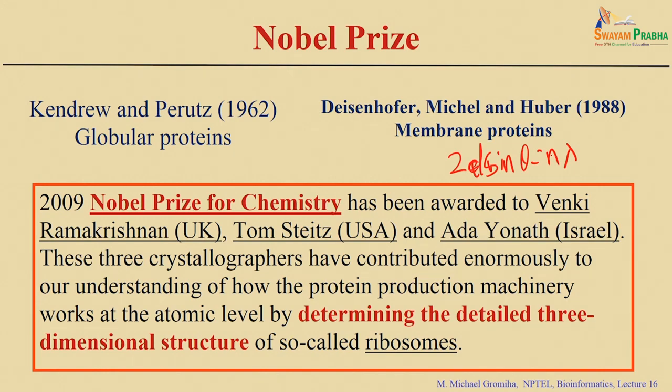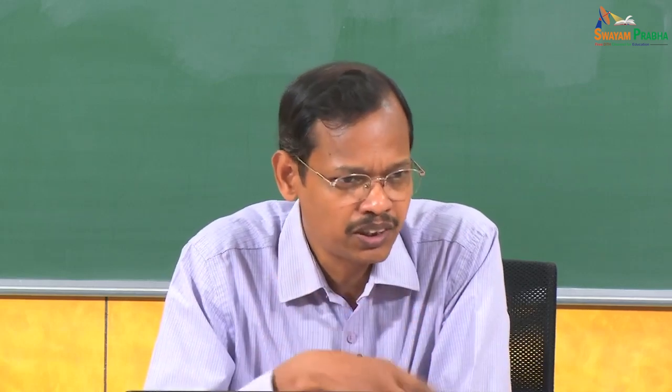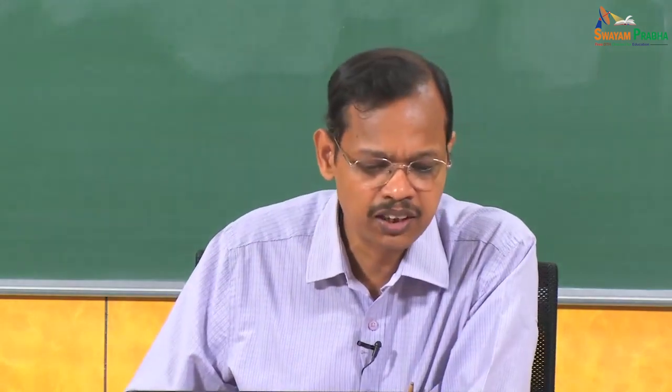X-ray diffraction was used to solve the structures of proteins — mainly globular proteins like myoglobin and hemoglobin. Kendrew and Perutz got the Nobel Prize in 1962 for understanding the structures of globular proteins using X-ray crystallography. There were several other contributions — vitamin B12, DNA structures — and Watson and Crick got the Nobel Prize for the DNA structure.